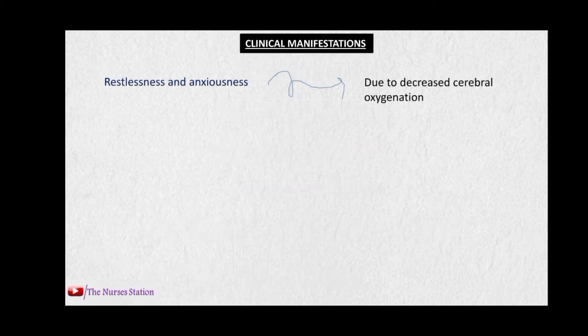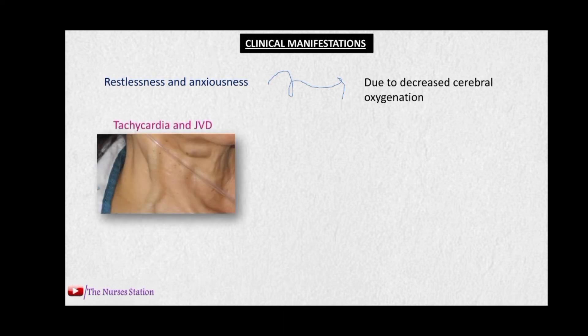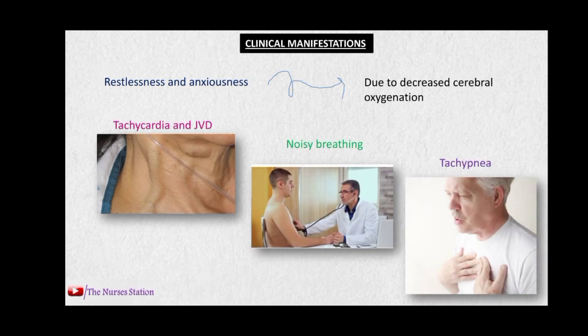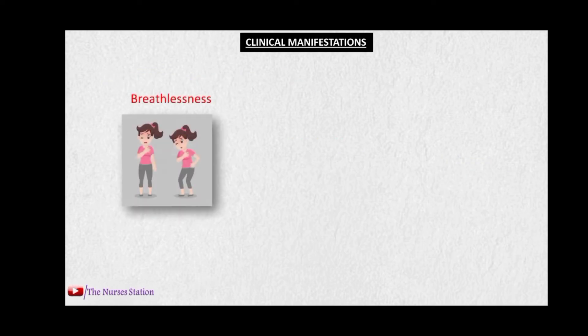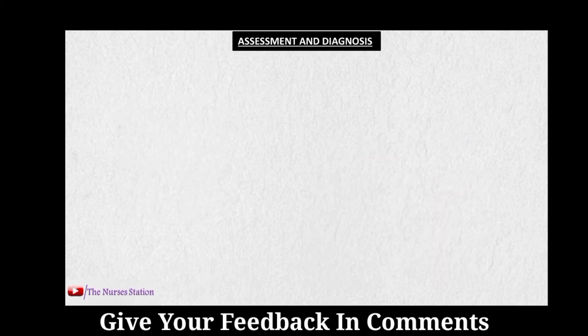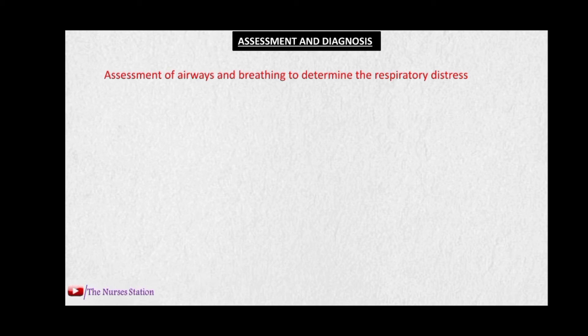The clinical manifestations include restlessness and anxiousness due to decreased cerebral oxygenation, tachycardia which is abnormally fast heart beating, and JVD which is jugular vein distension. There may be noisy breathing, tachypnea which is abnormally fast respirations, breathlessness or dyspnea, and continuous coughing with foamy sputum.